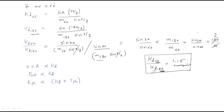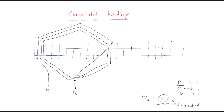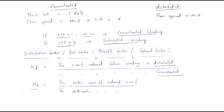Phase spread is an important factor in maintaining the magnitude of voltage. The KVA output of the machine is proportional to the distribution factor, and the phase winding is proportional to the distribution factor times the phase turns. These are the key points regarding the distribution factor.